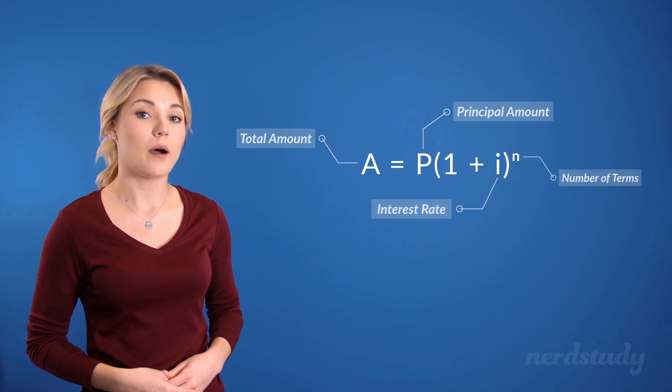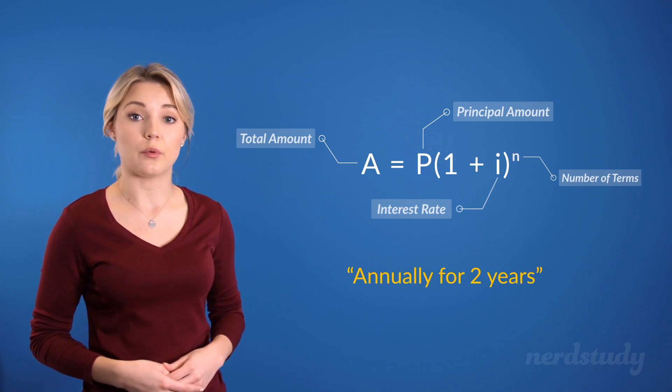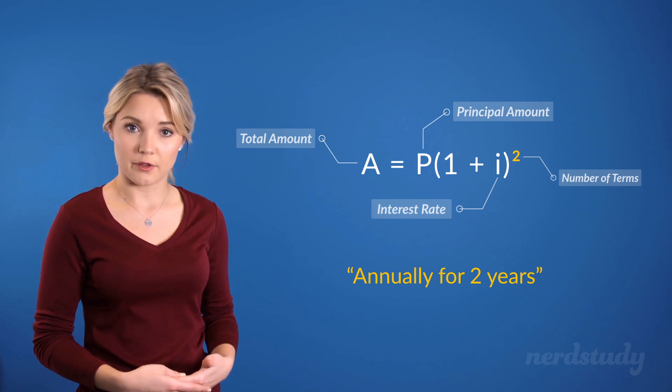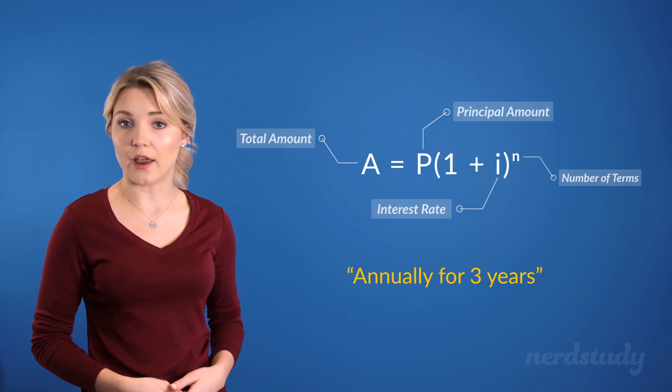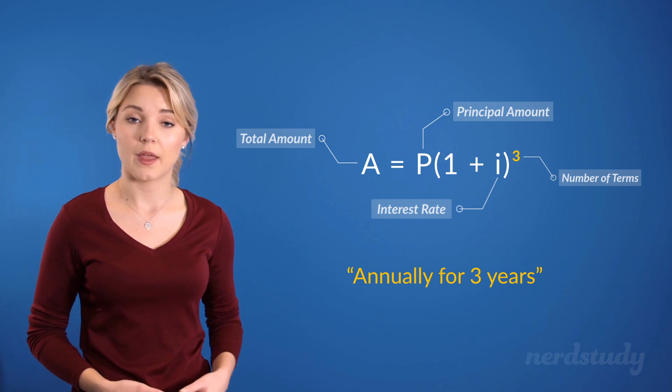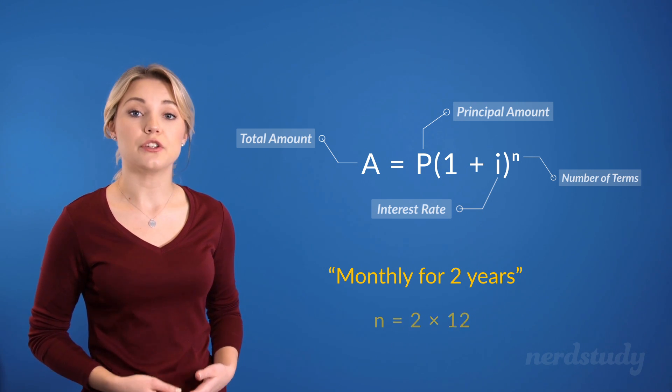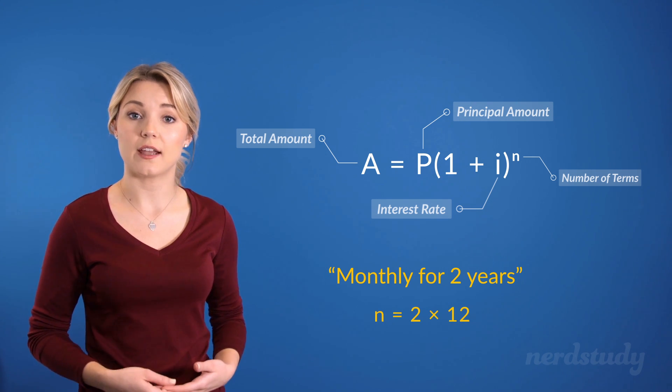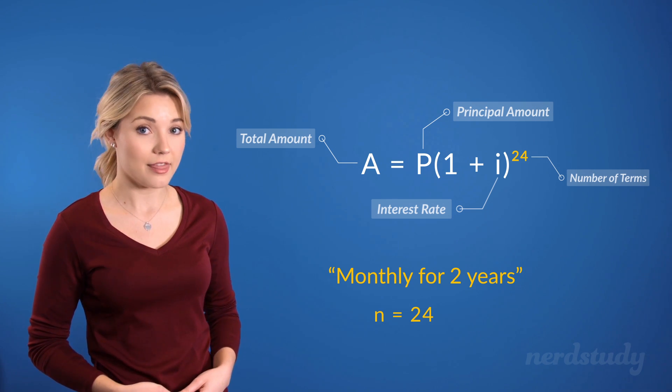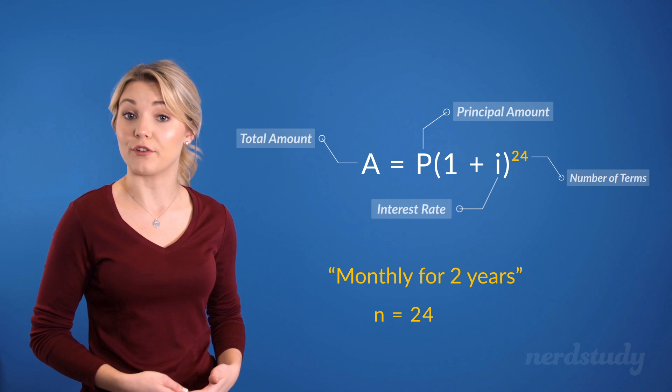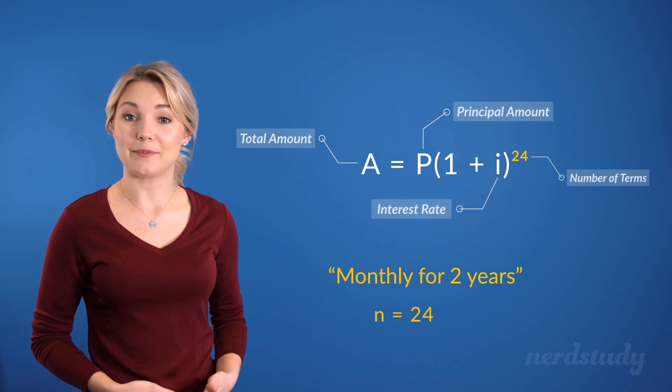For example, if it's compounded annually for 2 years, then our N would be equal to 2. Similarly, if it's compounded annually for 3 years, then our N would be equal to 3. However, if it's compounded monthly for 2 years, then we would have to do 2 times 12 to get an N of 24, since it's compounded every month in this example instead of every year. Great, so let's go ahead now and try some examples together.